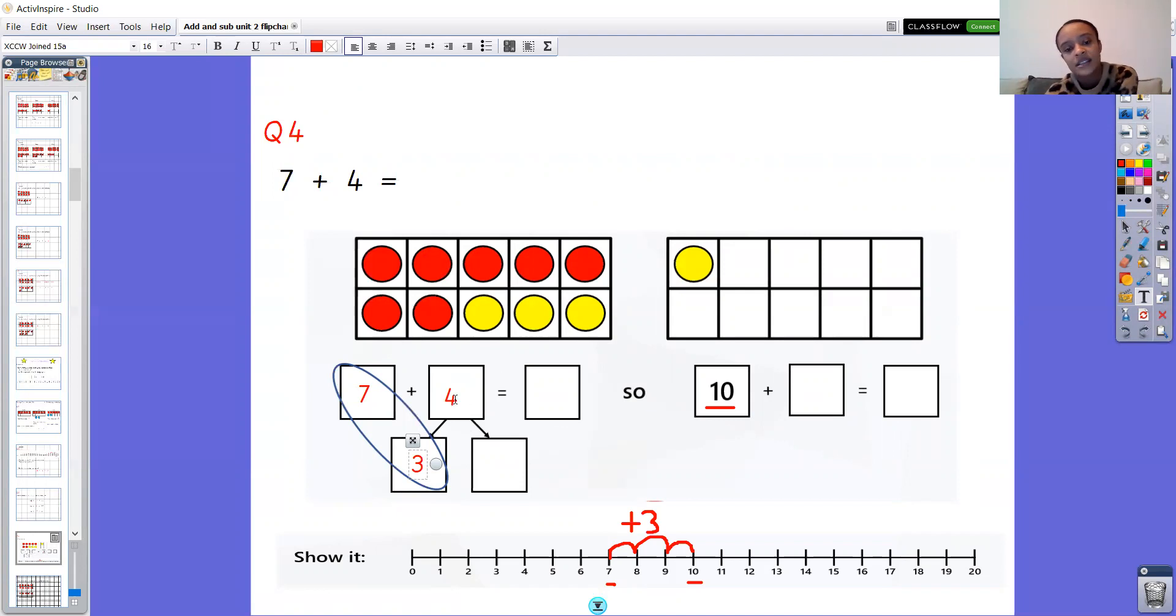Now we've got to partition four into two numbers. We've got one part which is three. We're going to put that three in our head, we're going to count on till we get to four and see what our other part is. Okay so three in your head ready, count on. Three, four. Oh just the one. So three and one makes four. So now we can add this number here, this one, to our 10. And we know that one ten and one one gives us the number 11.